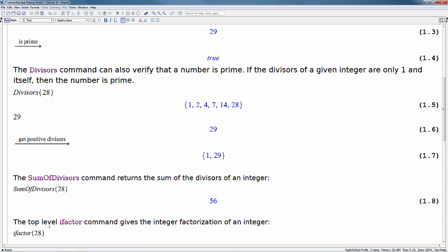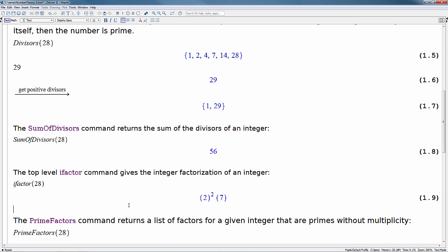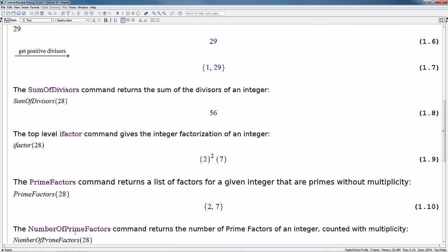The top level ifactor command gives the integer factorization of an integer. So here we can do ifactor of 28, and we can see that the integer factorization of 28 is going to be 2 to the power of 2 times 7. The prime factors command returns a list of factors for a given integer that are primes without multiplicity. So we can do prime factors of 28, and the prime factors here are 2 and 7.